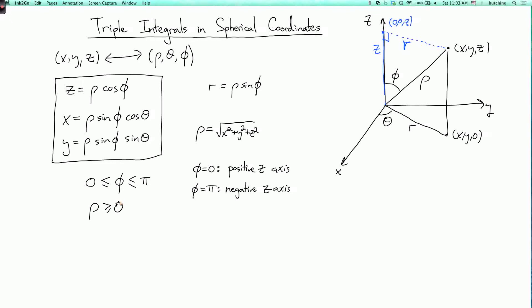So if rho is fixed and positive, then the set of points for a given fixed rho is a sphere. And then theta corresponds to longitude. And the coordinate phi is equivalent to latitude, but it's on a different scale.